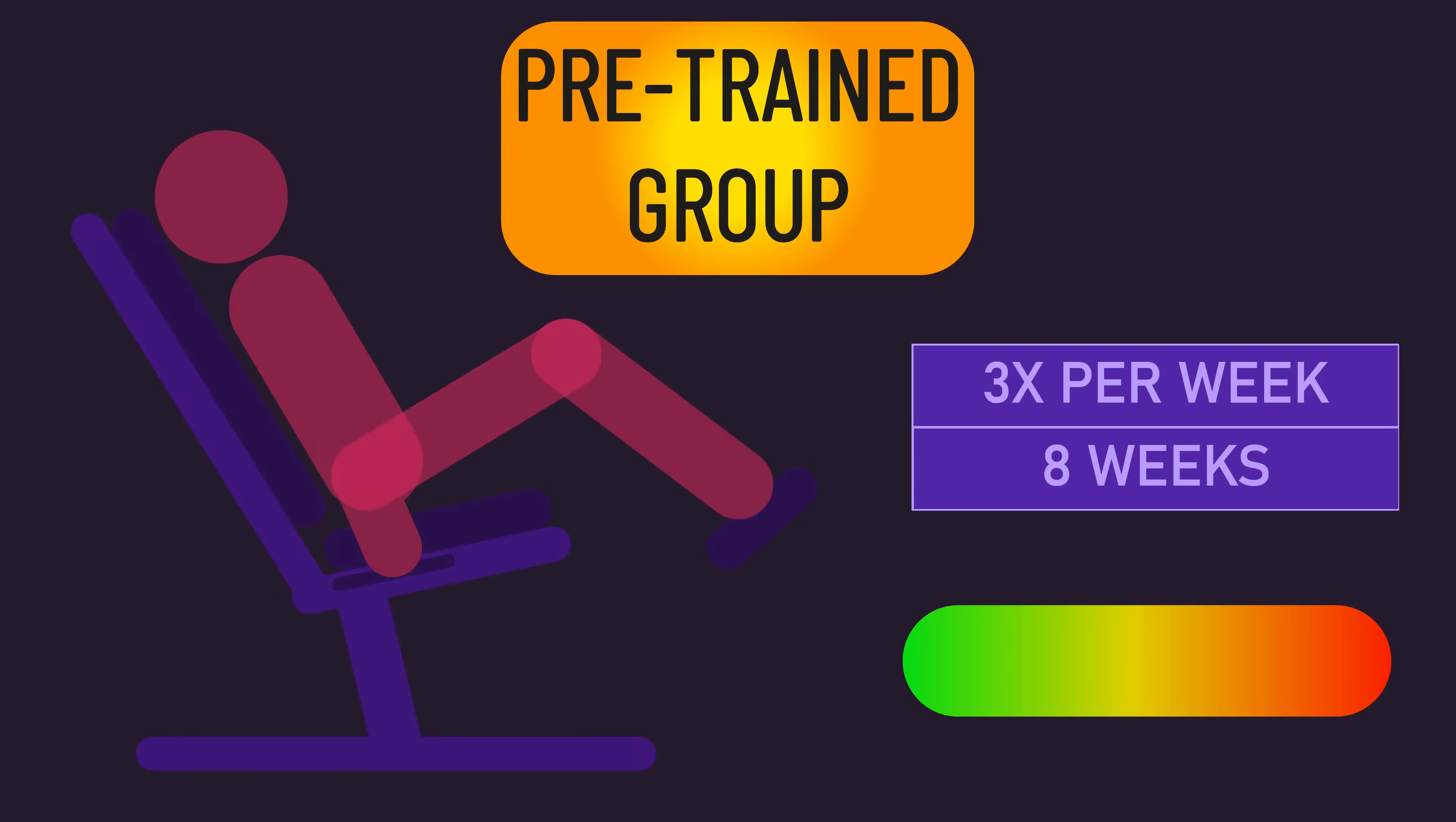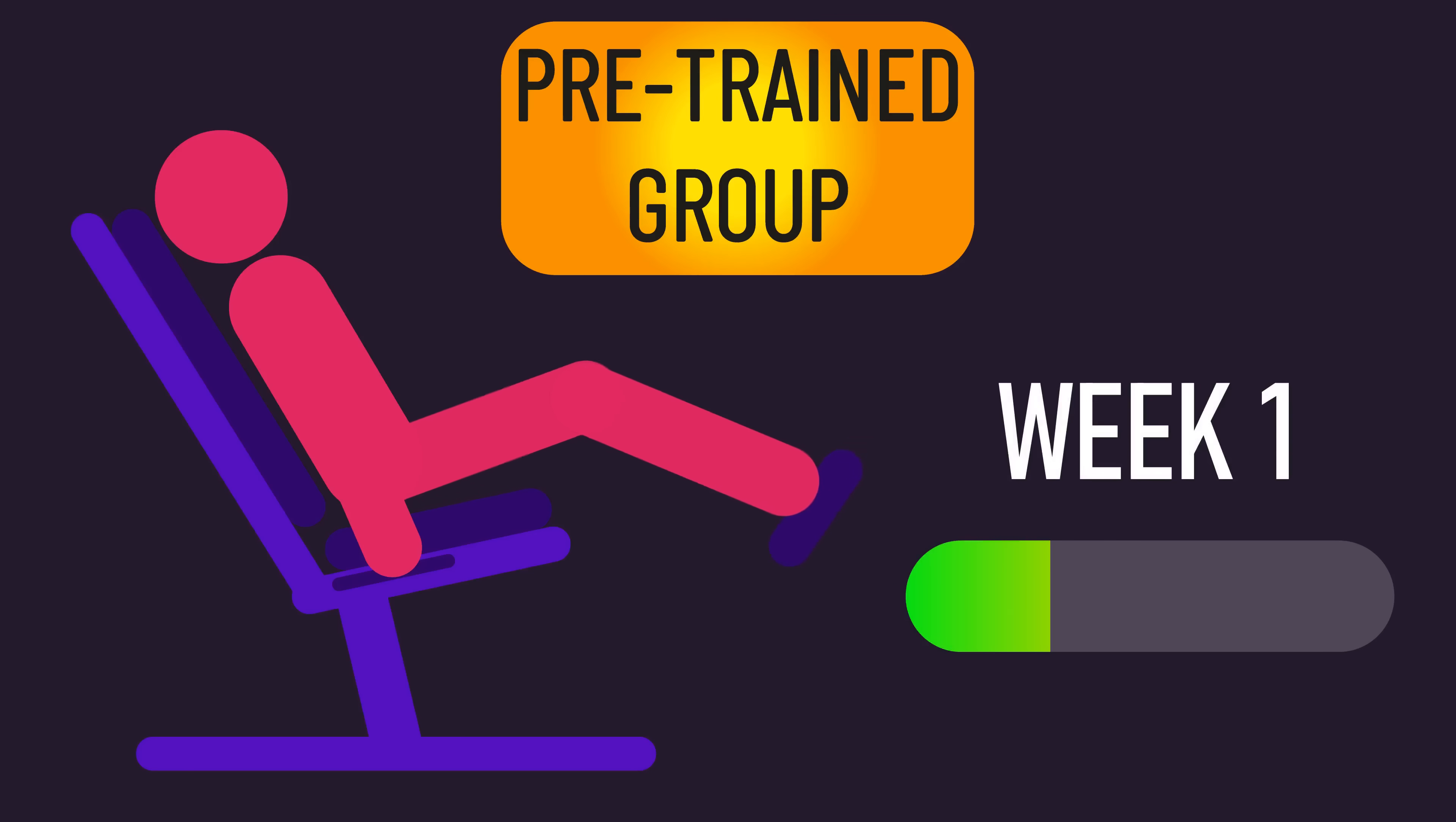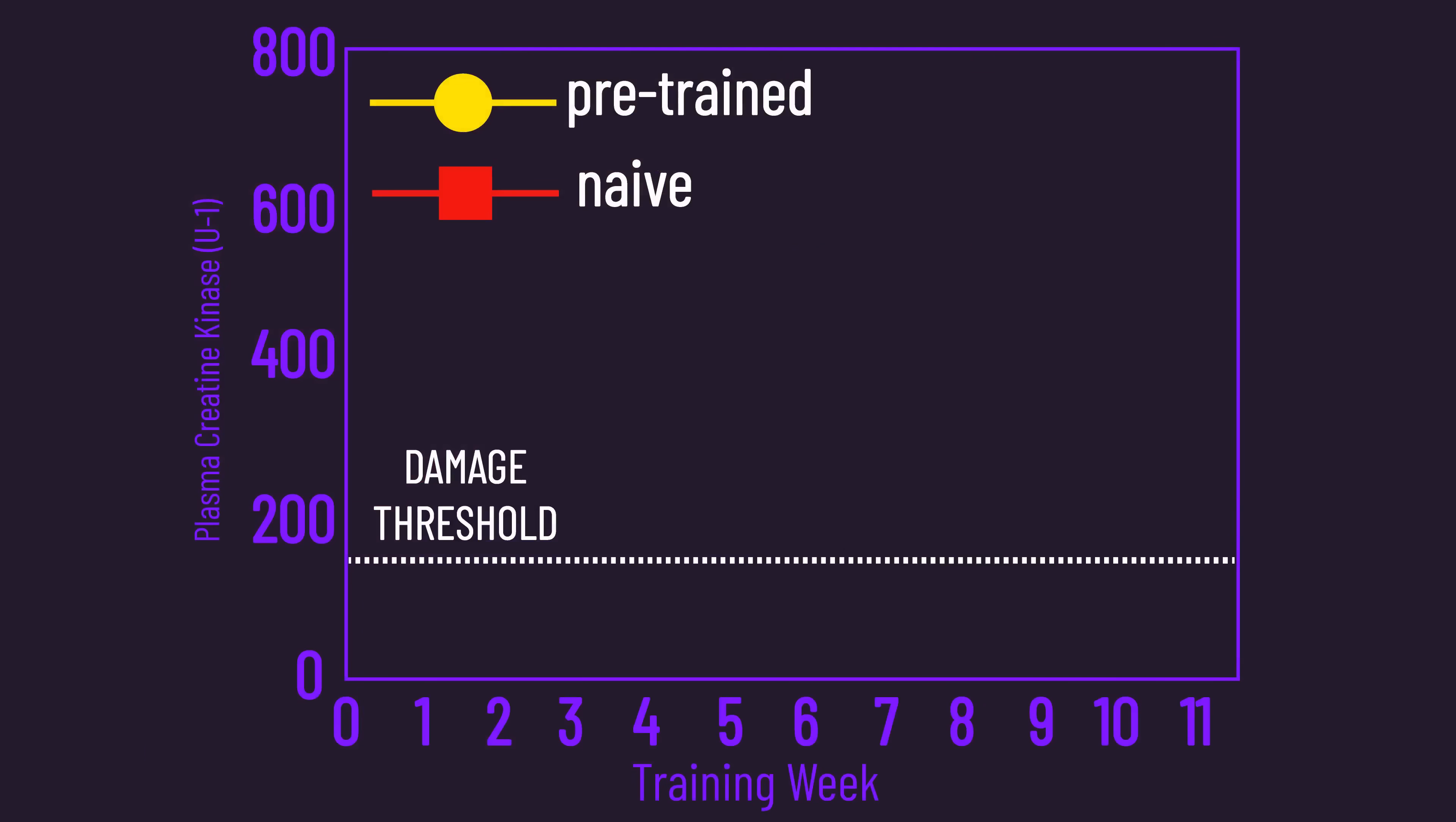The pre-trained group did the same thing, but they had a three-week ramp-up phase before the eight weeks where they gradually acclimatized themselves to the training program. Due to this acclimatization phase, they ended up experiencing little amounts of damage across the training weeks, whereas the naive group experienced much higher damage levels across the training weeks.